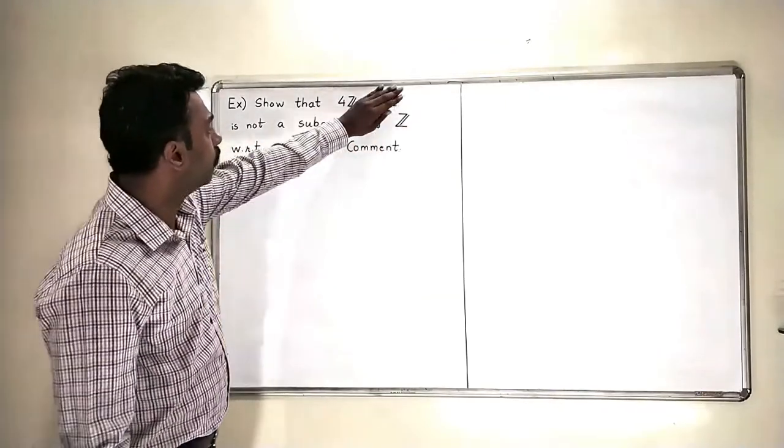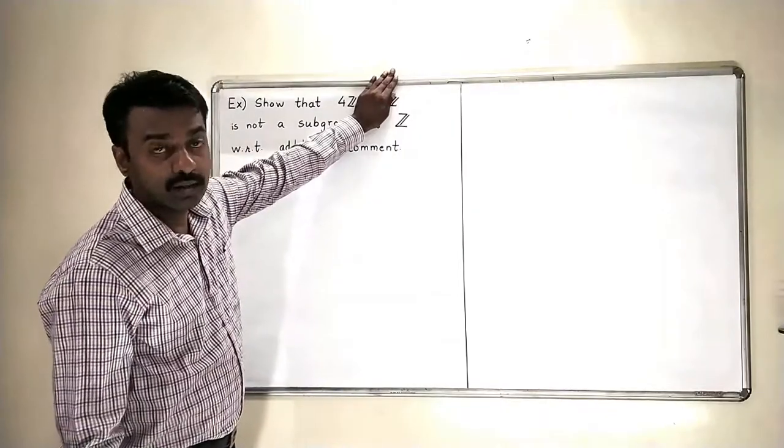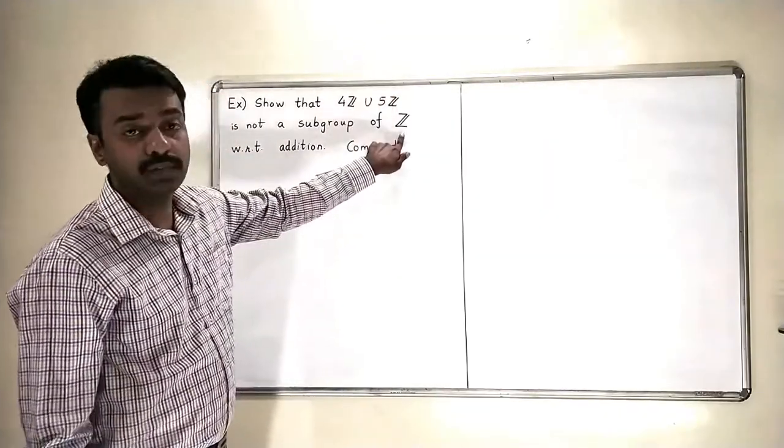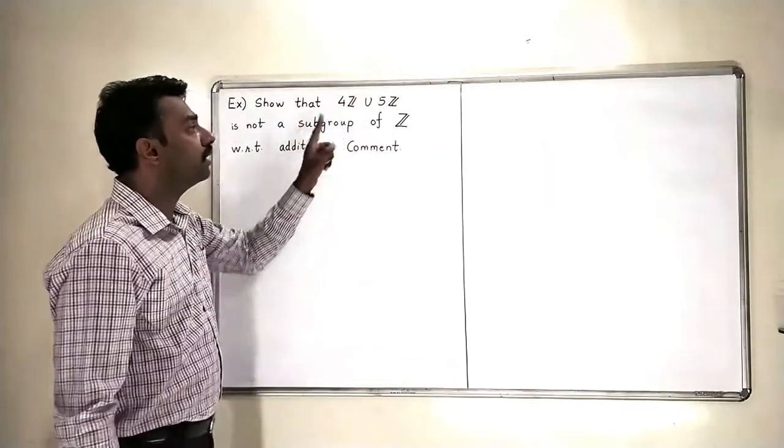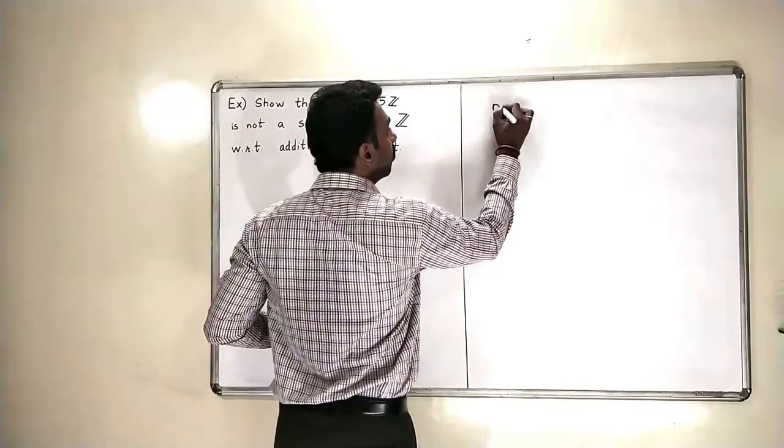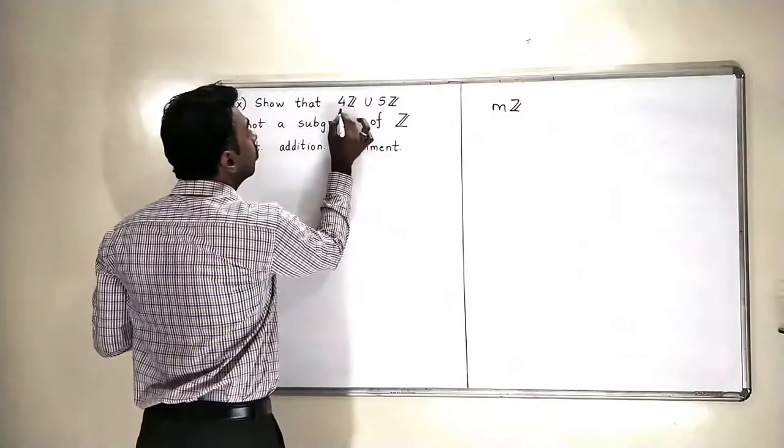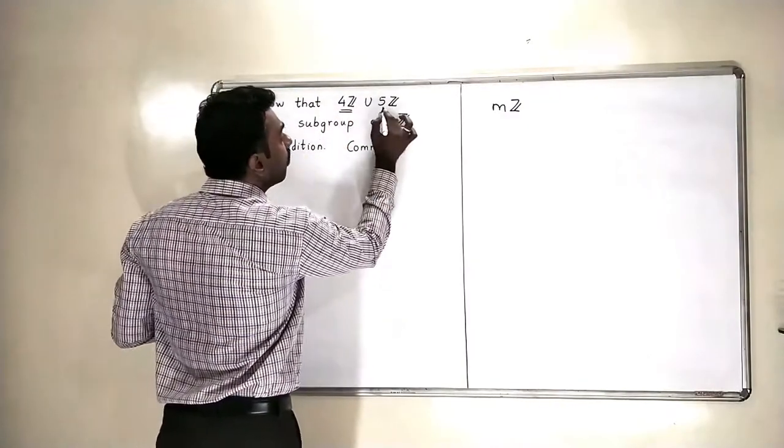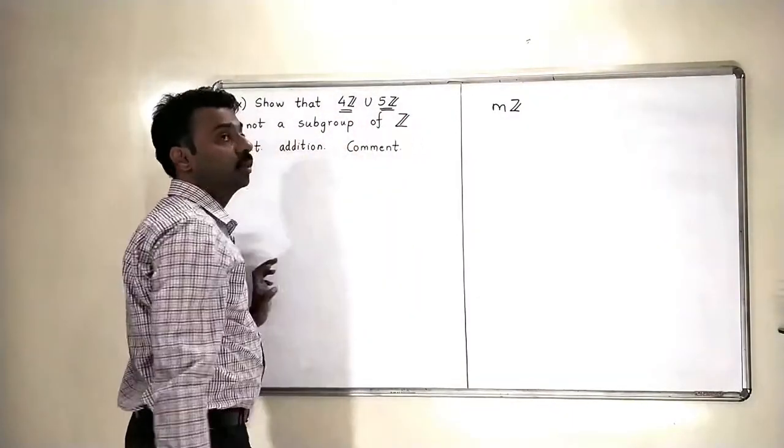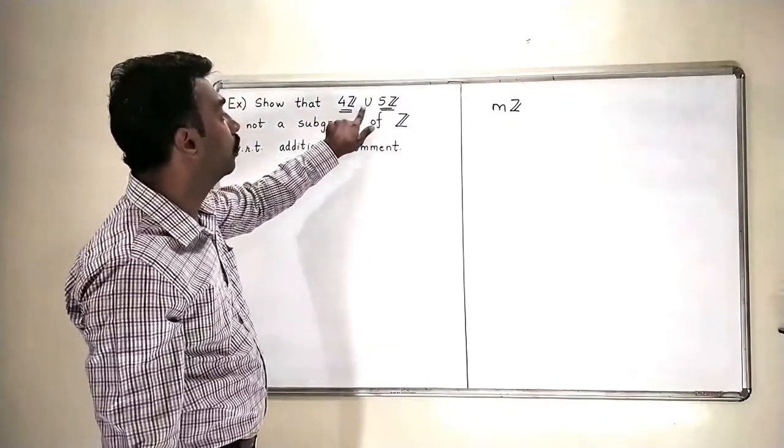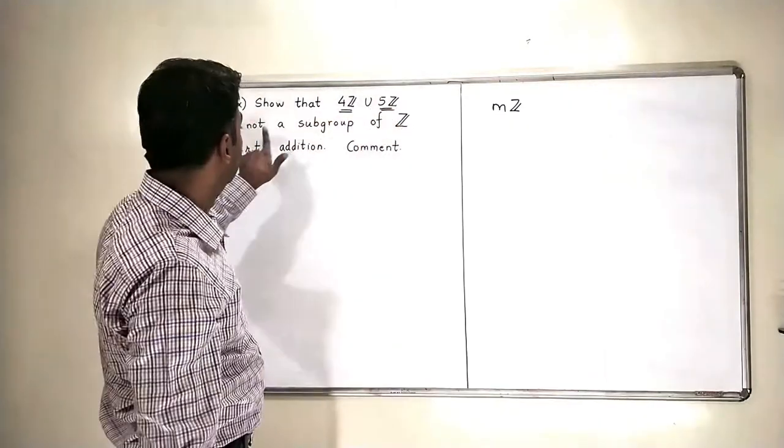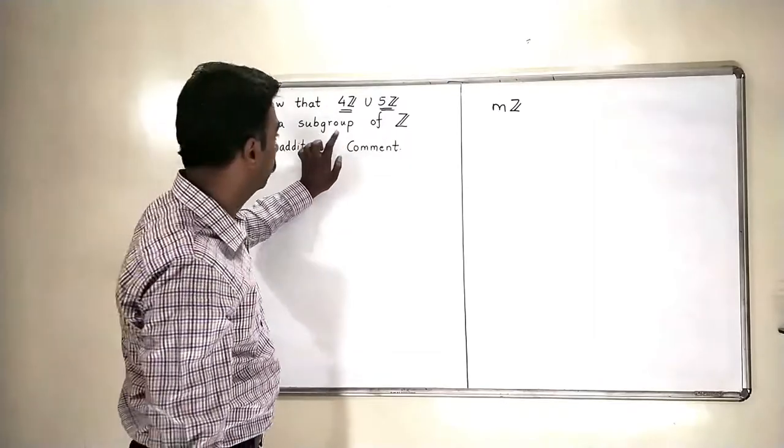We know that if we consider 4Z alone, then 4Z will be a subgroup of Z. Because any mZ is always a subgroup of Z. So 4Z is a subgroup of Z. 5Z is also a subgroup of Z. But 4Z union 5Z is not a subgroup of Z.